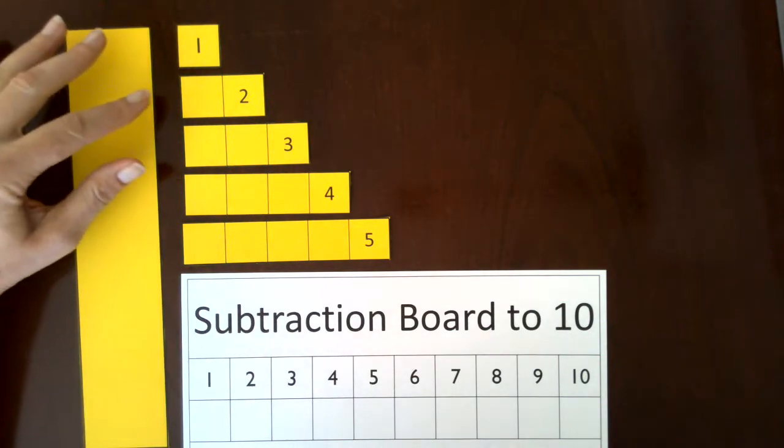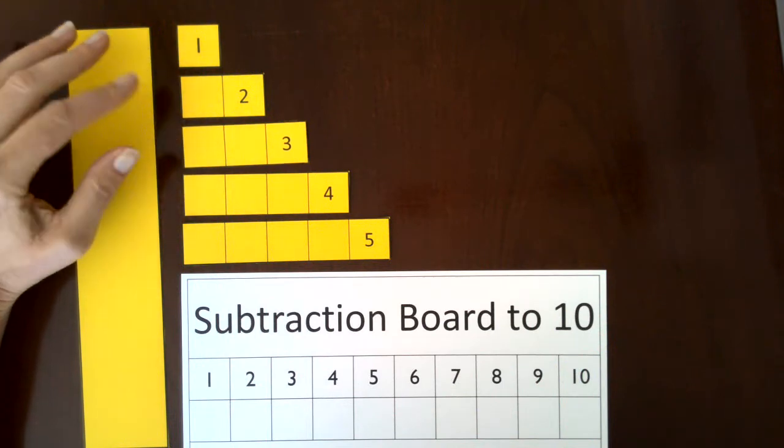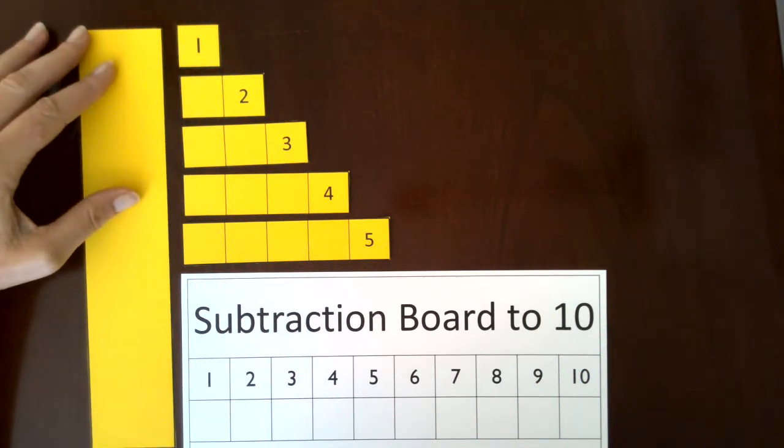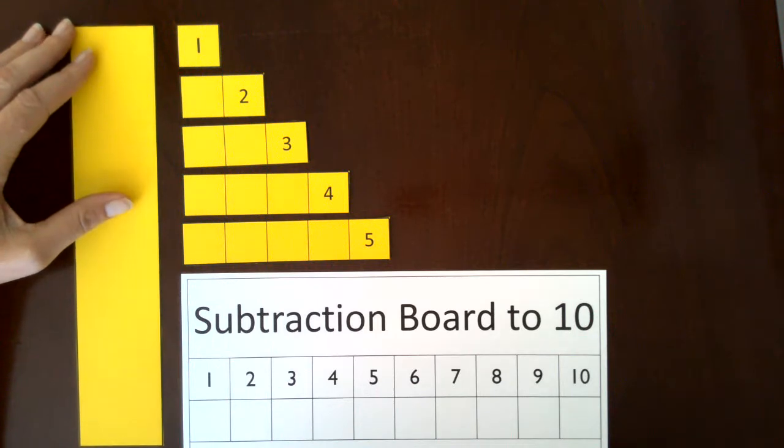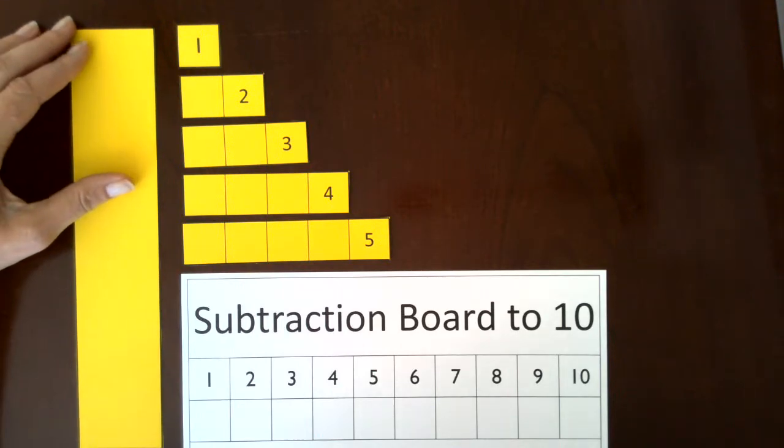To start with, this lesson will come after subtraction with number rods—the red and blue number rods—and after subtraction with the bead bars. So this is a passage to a more abstract way of subtracting versus the more hands-on concrete way.